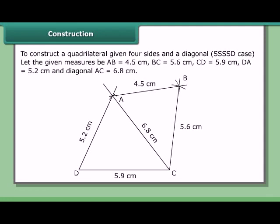To construct a quadrilateral given four sides and a diagonal — the SSSSD case — let the given measures be AB = 4.5 cm, BC = 5.6 cm, CD = 5.9 cm, DA = 5.2 cm, and diagonal AC = 6.8 cm.